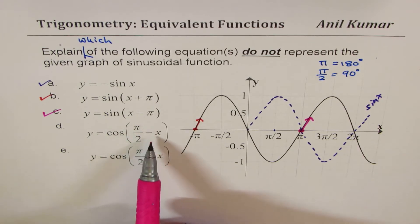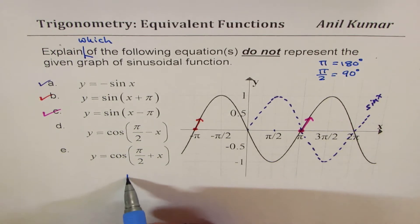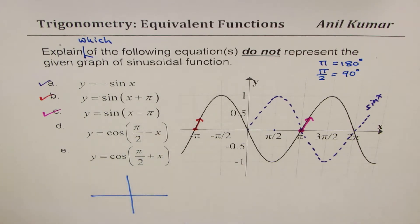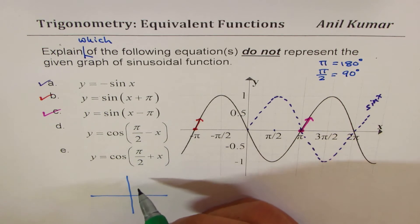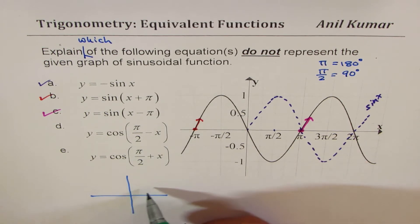Y equals cos of pi by 2 minus x. Now we can look into it in a couple of ways. If I have cos pi by 2 minus x, I'm looking for a value which is, if this is x, then pi by 2 minus x will be...